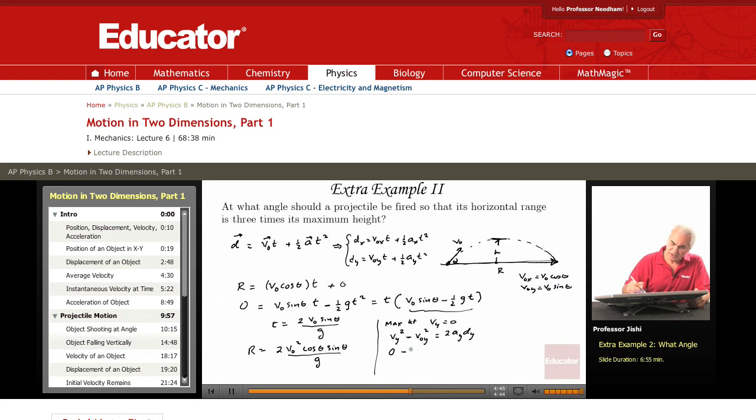So this is minus V0 squared sine squared theta equals 2AY, which is just minus G, and DY is the maximum height H. So this means that the maximum height H is V0 squared sine squared theta over 2G.